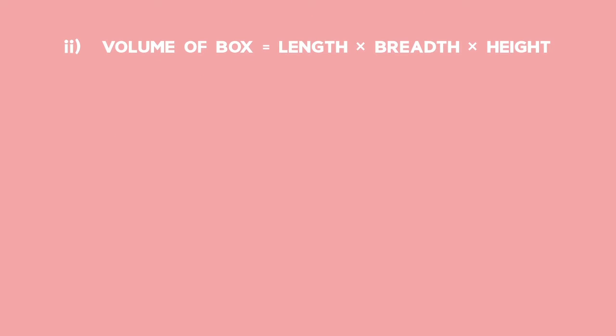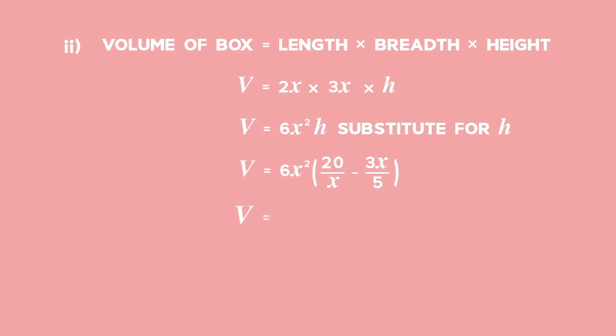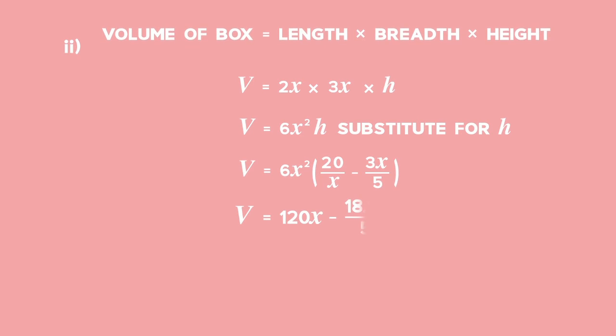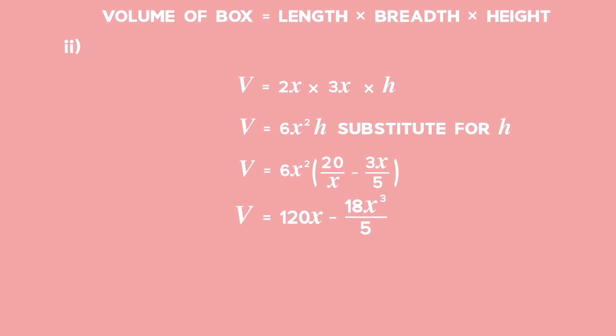2) The volume of a box is the product of the length, breadth, and height. V = 2x × 3x × h = 6x²h. There are three variables in this equation, but we found h in terms of x in part 1. So, substitute for h. Now, V = 120x - 18x³/5.